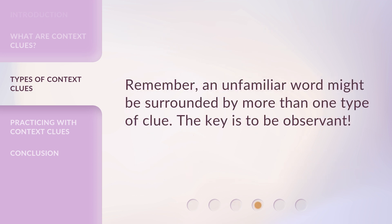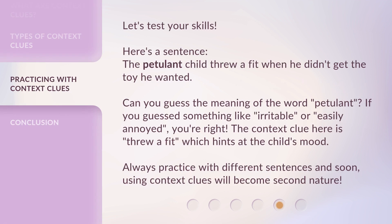Remember, an unfamiliar word might be surrounded by more than one type of clue. The key is to be observant. Let's test your skills. Here's a sentence: the petulant child threw a fit when he didn't get the toy he wanted. Can you guess the meaning of the word petulant? If you guessed something like irritable or easily annoyed, you're right. The context clue here is 'threw a fit,' which hints at the child's mood. Always practice with different sentences, and soon using context clues will become second nature.